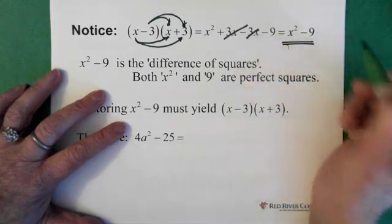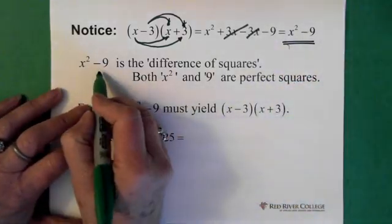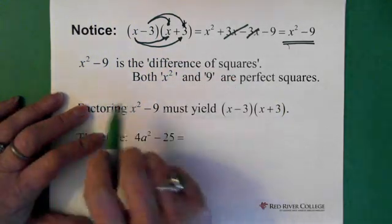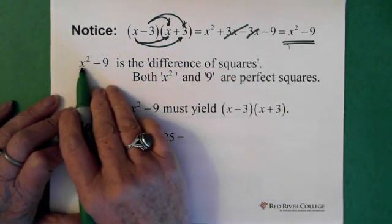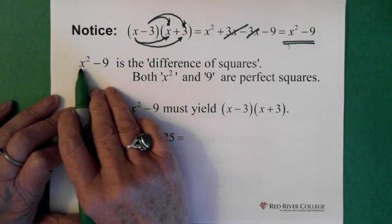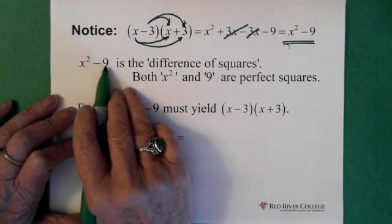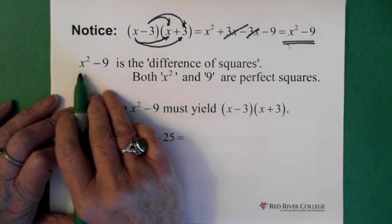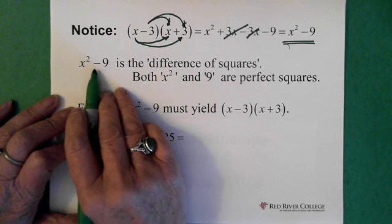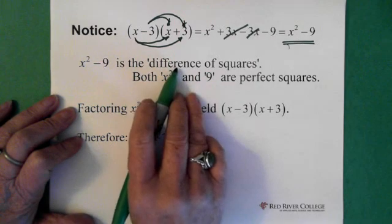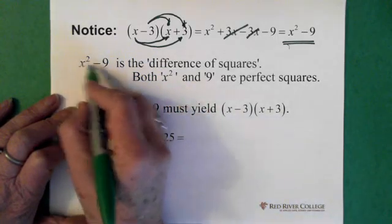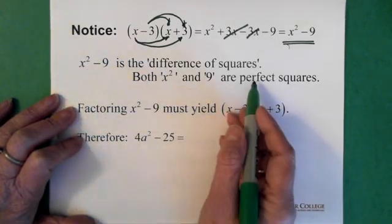What we have when we have x squared minus 9 is called the difference of squares. Notice that here we have something squared, which is x — x is squared — and here we have something squared: we have 3 squared. So whenever you have this situation, something squared minus something squared, you have the difference of squares. Both of these are perfect squares.